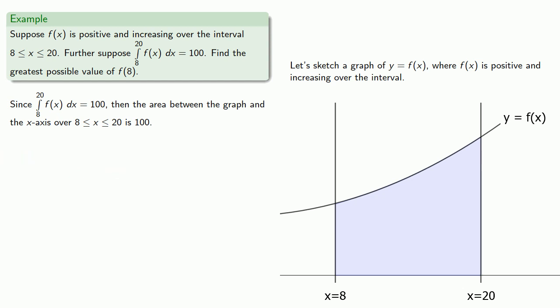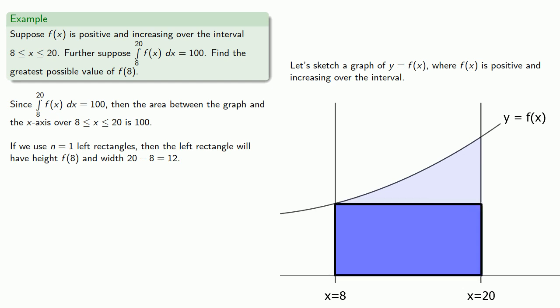Well, we're interested in saying something about f of 8, so if we use n equals 1 left rectangles, then the left rectangle will have a height of f of 8 and a width of 20 minus 8, or 12.